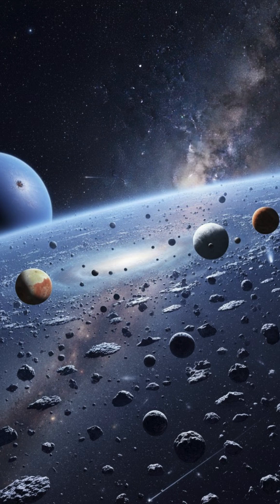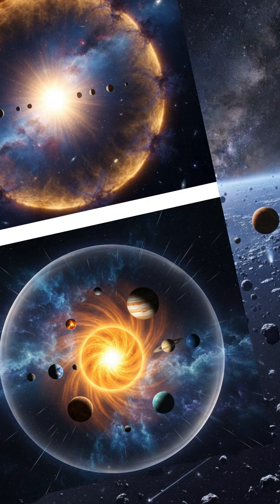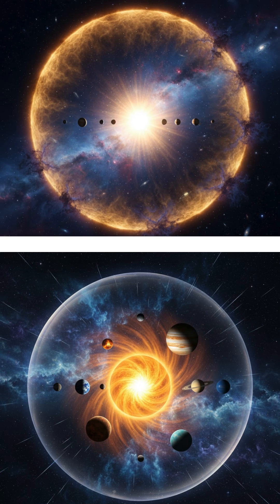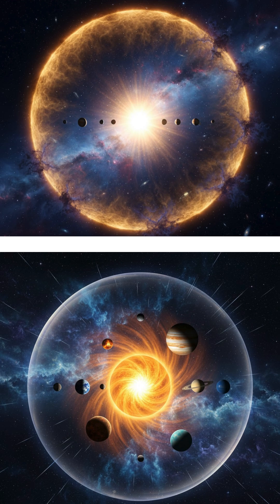The solar system's outermost boundary is defined by the heliosphere, a vast bubble of charged particles blown outward by the solar wind, which protects the planets from interstellar radiation.